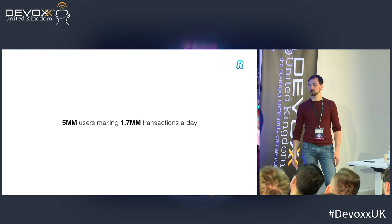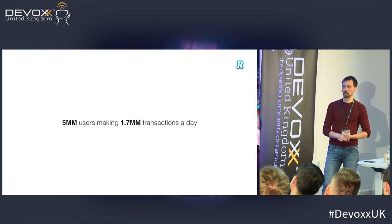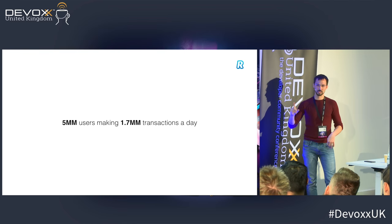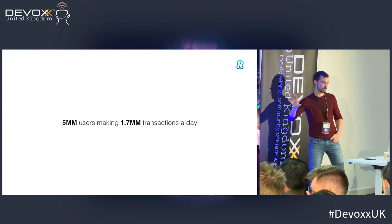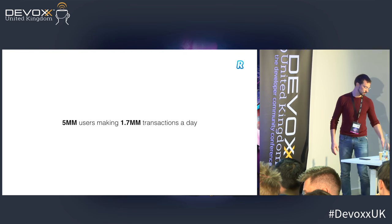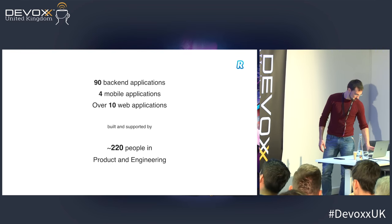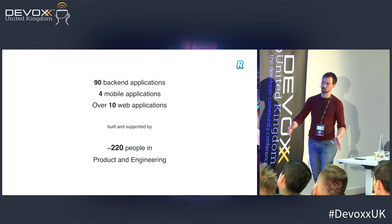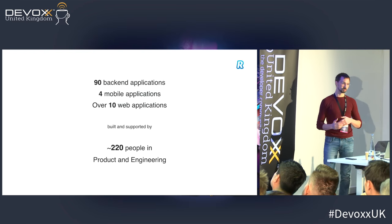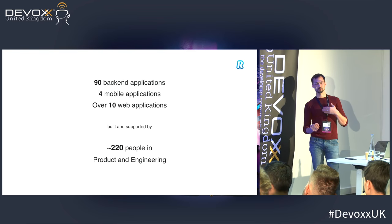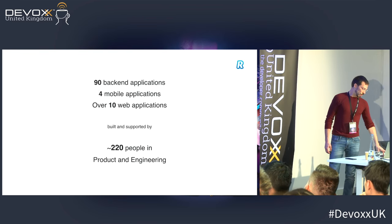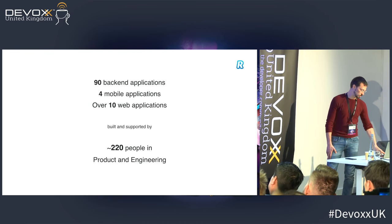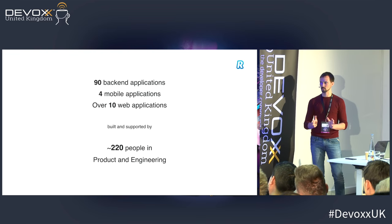This is the volume of transactions we're processing on a daily basis — it's quite sizable. If you look at the industry in general, the faster payments in the UK — the biggest banks process that many transactions a month. Here we're talking about a lot of other transactions as well, a lot of them card transactions, just to give you a perspective. It's around 90 backend applications supporting all of this for mobile applications.